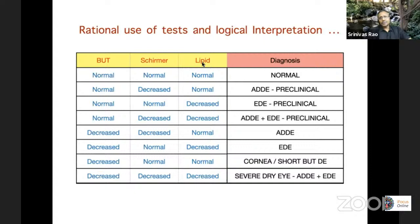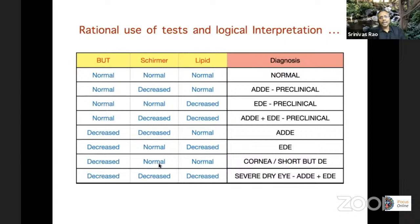One important category: somebody who has a normal Schirmer, normal lipid profile, but decreased BUT. This is increasingly being recognized, particularly by the Asia Dry Eye Society and the Japanese, and is called the short BUT dry eye. Assuming the cornea is relatively healthy and there's random breakup here and there — if it's very short, these people can be very symptomatic with a normal Schirmer and normal lipid, and you won't pick it up unless you do the BUT.